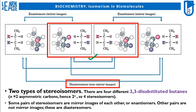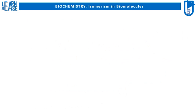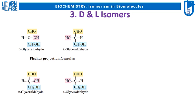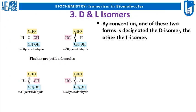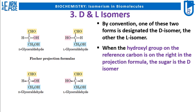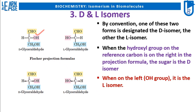The third subtype of configurational isomers is D and L isomers. The image of D and L glyceraldehyde is shown. By convention, one of these two forms is designated the D isomer and the other the L isomer. When the hydroxyl group on the reference carbon is on the right in the projection formula, the sugar is the D isomer. When the OH group is on the left side of the molecule, it is the L isomer.